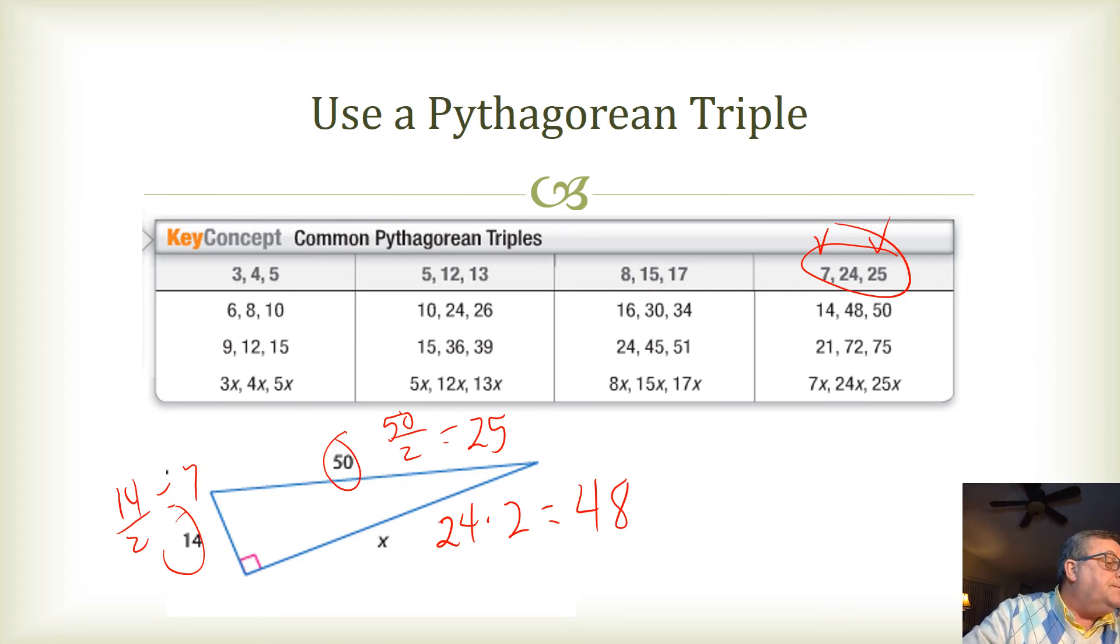All right. Well, here we go. There's an example of Pythagorean triples. And so, that might be something to memorize. 3, 4, 5 is easy.